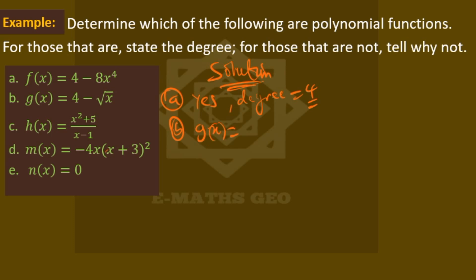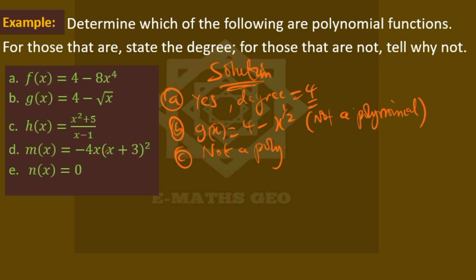The second one is not a polynomial because g(x) equals four minus the square root of x, which can be written as x raised to the power one-half. Since one-half is not an integer, it is not a polynomial. The third part, h(s) equals s squared plus five over s minus one, is not a polynomial — it's called a rational function, because we are dividing one polynomial by another polynomial.